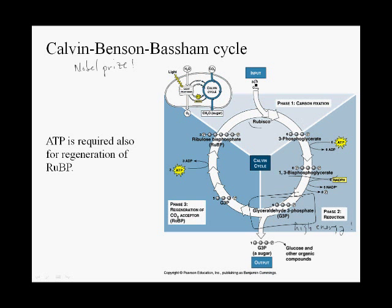If we consider three parallel reactions — three molecules of Rubisco, each fixing a CO2 — then three carbon dioxide molecules combine with three RuBPs, and as a result they form six molecules of 3-phosphoglycerate. These six molecules will then form six molecules of glyceraldehyde 3-phosphate.